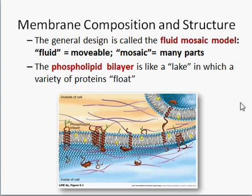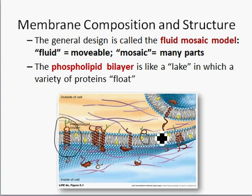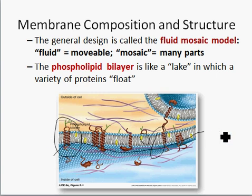If you look at an actual plasma membrane, we can see this fluid mosaic concept. Here's a plasma membrane picture, and within it there are lots of components. That's the mosaic part. There's proteins, the little yellow is cholesterol, there's phospholipids, and it's flexible. You can see in this diagram there's some movement across the membrane, so it's both fluid and a mosaic.